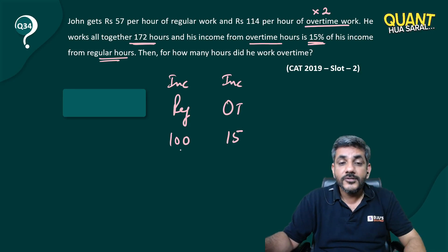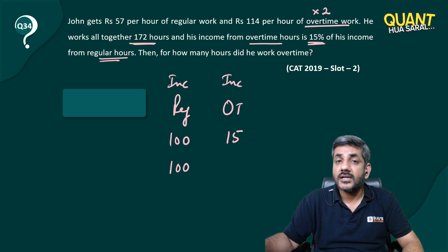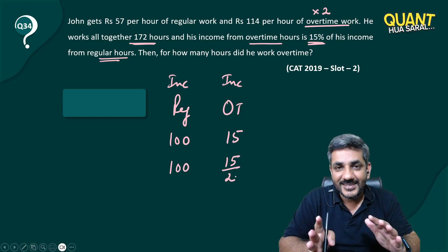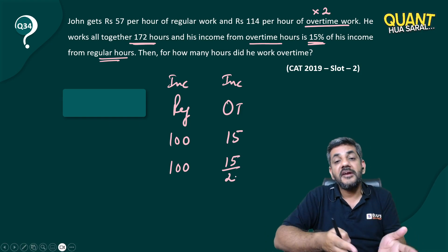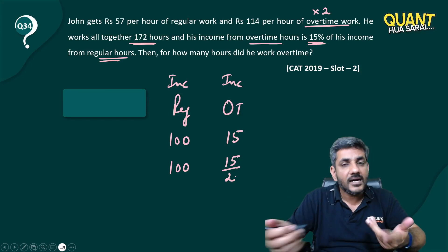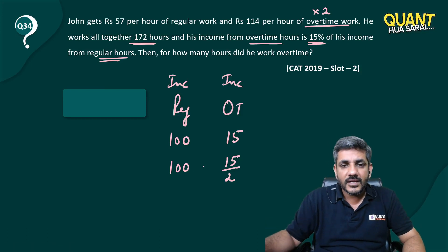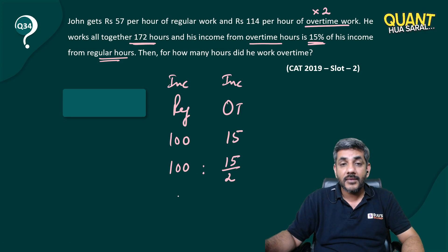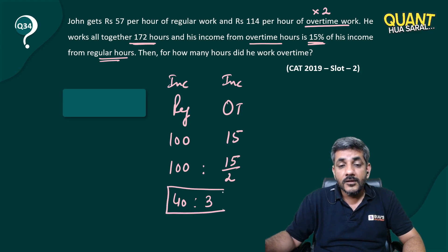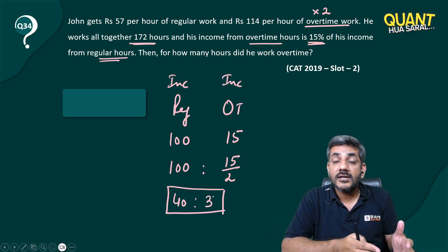In overtime he's paid double, so in terms of hours: if he's working 100 hours regular, that means he's working 15/2 hours in overtime. You're getting double the money in overtime, so your income is 15, which means hours are 15/2. Therefore the ratio of regular to overtime hours is 200:15, which simplifies to 40:3.